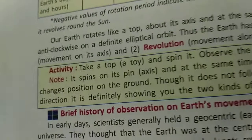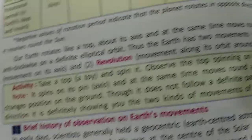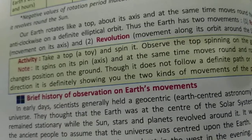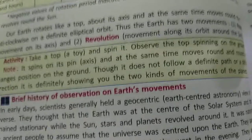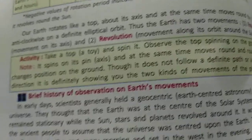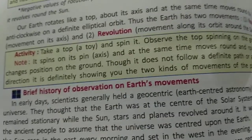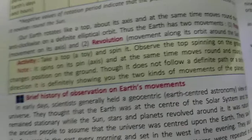The earth rotates like a spinning top about its axis, and at the same time it moves around the Sun in an anticlockwise manner on a definite elliptical orbit. Thus the earth has two motions: one is rotation, which is on its own axis, and the other is revolution, that is, movement along the orbit around the Sun.